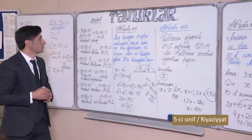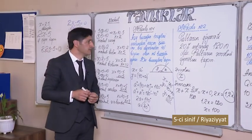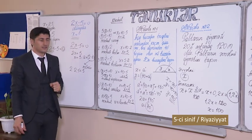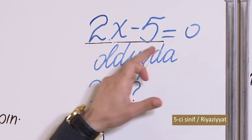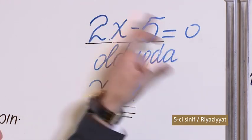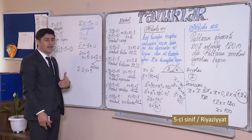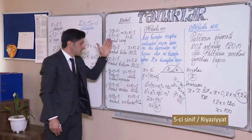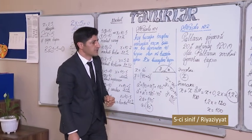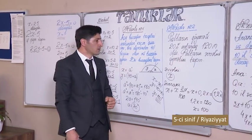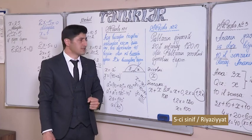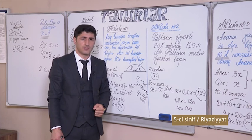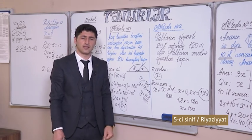Beləliklə, biz sizinlə bugün tənliklər mövzusunu öyrəndik. Dəyişəni olan bərabərliyə tənlik deyilir. Dəyişənin ifadəni doğru bərabərliyə çevirən qiymətinin tapılması həll prosesidir və tapdığımız cavab tənliyin köküdür. Verilən nümunələrlə də tənliklər mövzusunu izah etdik. Mövzunu daha yaxşı anlamaq üçün dərsliyinizdəki bütün tapşırıqları ev tapşırığı olaraq həll etməyi unutmayın. Sağ olun, gələn dərslərdə görüşənə deyək.